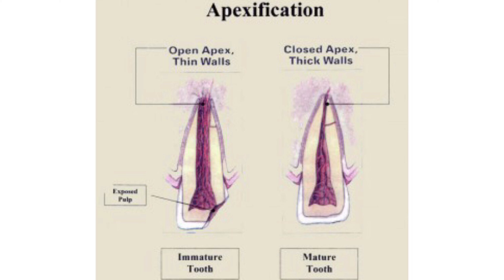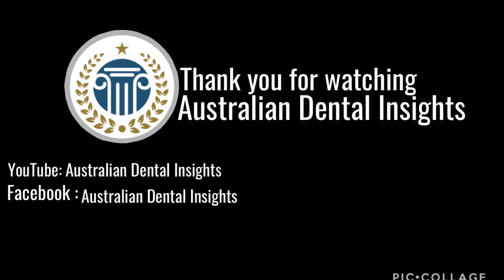In contrast to apexogenesis, apexification is a non-vital pulp therapy done on a tooth that is not alive. It's about attaining root-end closure, in contrast to apexogenesis which is about root development. In apexification, you disinfect the root canal followed by induction of an acceptable apical barrier to block the unfinished root ends. Both treatments are done on immature permanent teeth, but apexogenesis is on a vital tooth and apexification is on a non-vital tooth.